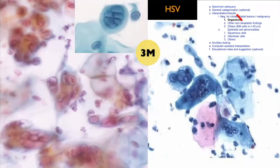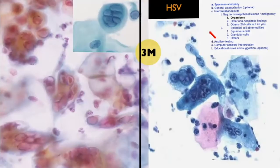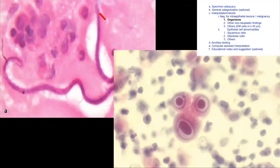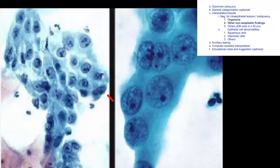Here you can see an 'owl-eye' appearance with prominent intranuclear inclusions, which are characteristic of CMV. Always ask for the history of immunosuppression or organ transplants. And here is what I mentioned before — microfilaria in the PAP smear. In India, microfilaria can be seen in cytology (urine, PAP smear) and in histopathology of lymph nodes — commonly tested in Indian exams, in addition to peripheral smears.